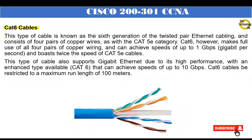CAT6 cables: this type is known as the sixth generation of twisted pair ethernet cabling and consists of four pairs of copper wires, as with the CAT5 category. CAT6, however, makes full use of all four pairs of copper wiring and can achieve speeds of up to 1 Gbps (gigabit per second), boasting twice the speed of CAT5e cables. It also supports gigabit ethernet, with an enhanced type CAT6 that can achieve speeds of up to 10 Gbps. CAT6 cables are restricted to a maximum run length of 100 meters.